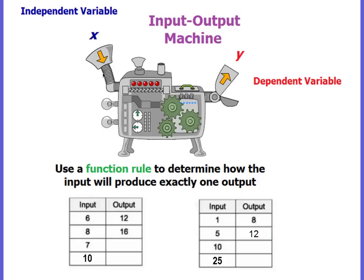Well, this is kind of the same thing we're going to do with our tables and equations. The number you input into the machine is our x variable — our independent variable. You have to know the independent variable to get the dependent variable. The number the machine spits out is the dependent variable, or y. We use a function rule to determine how the input produces that one output.